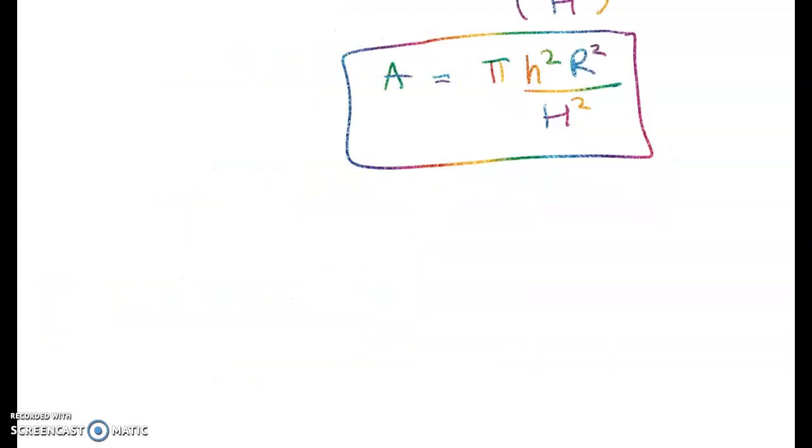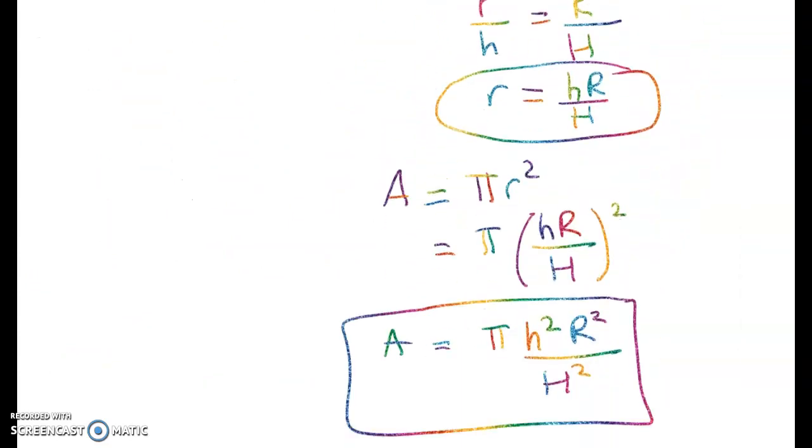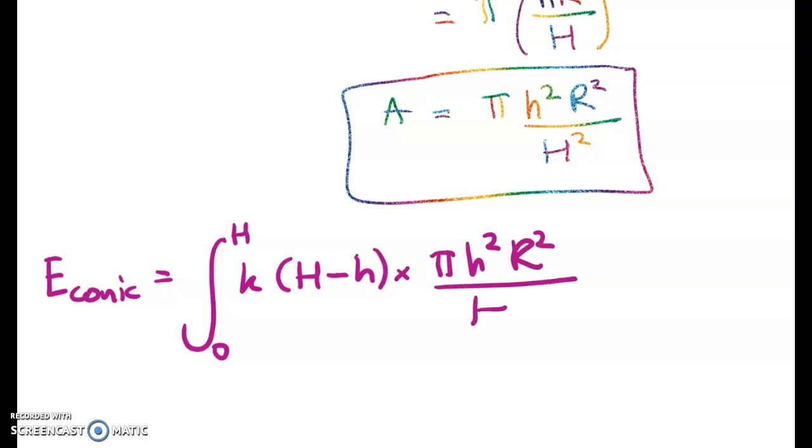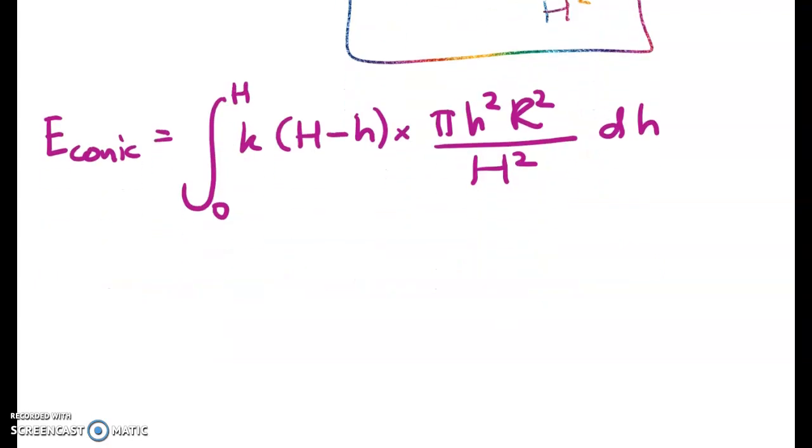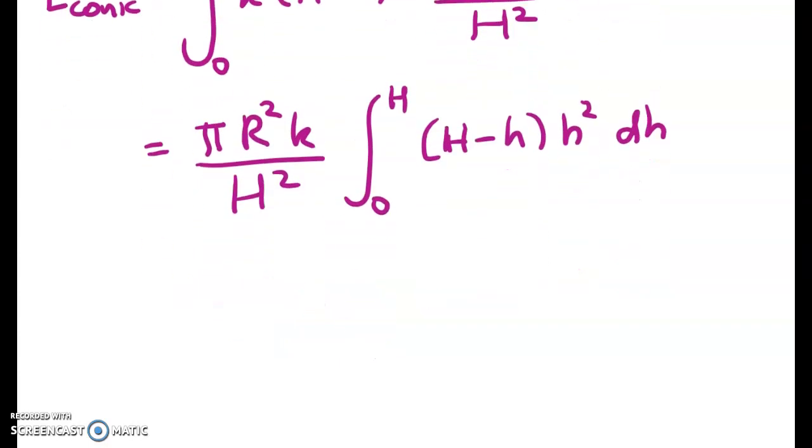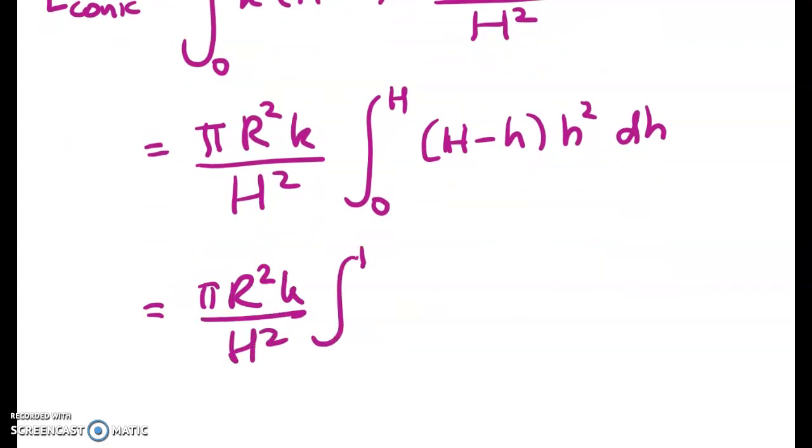And because we've done all that work earlier on the area of the conic circle this one's going to be very very similar. So we get E equals this. So from H to zero k times the maximum height minus h times this. And again we take the constants to the front just makes it much easier to see what I'm doing. So pi big R squared k over big H squared and we're left with this little integral H minus h times h squared.